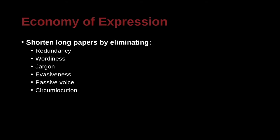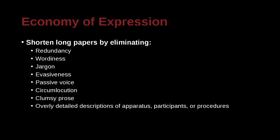Circumlocution — I love this word, though I can't quite say it right. Circumlocution means that you're going around in circles, saying something and then saying almost the same thing again, and then almost the same thing again. Watch out for that. It's very common in Chinese writing, so a lot of my students do this. Clumsy prose means writing things that are not very smooth. The best way to solve that is to try to make your sentences short.